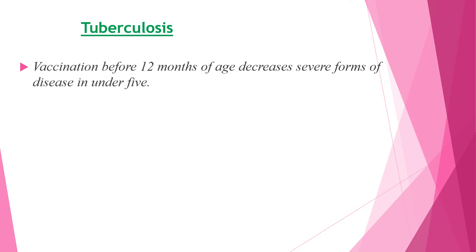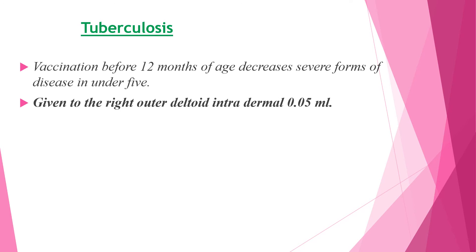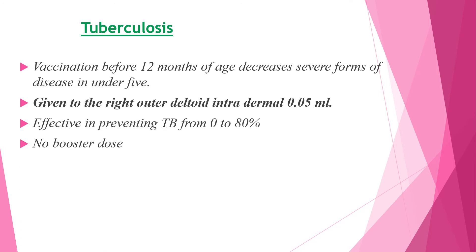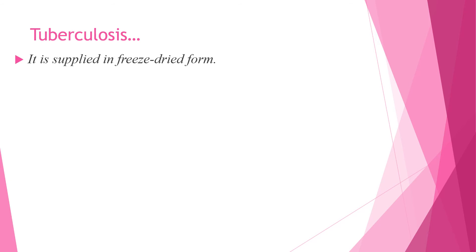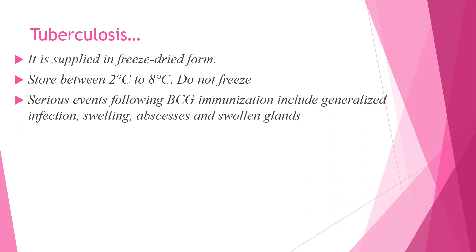BCG vaccine is given to the right outer deltoid intradermally with a dose of 0.05 ml. It is effective in preventing TB from 0 to 80 percent with no booster dose. The contraindication for BCG is symptomatic HIV or other immune deficiency. BCG is supplied in freeze-dried form and stored between two to eight degrees Celsius; do not freeze. Serious events following BCG immunization include generalized infection, abscess, and swollen glands. Mild events include injection site reactions.